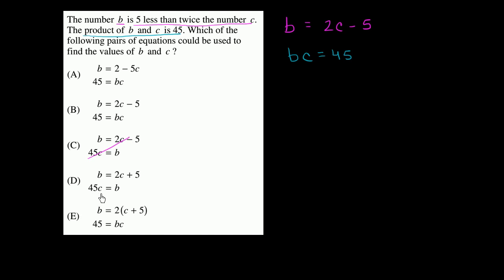This one has 45c is equal to b. Well, once again, 45c equals b. We can knock that one out. This one has 45 is equal to bc. So now we can just focus on the first of these equations.